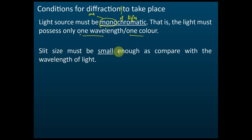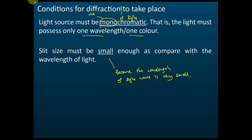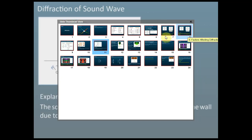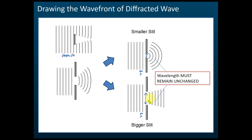The second requirement is that the size of the slit must be small. This is because the wavelength of light is very, very small. If you use a big slit, you can't see the diffraction pattern clearly. As shown, if the size of the slit is very big, then the diffraction pattern is not clear. To see a clear diffraction pattern of light, you must use a very, very small slit.